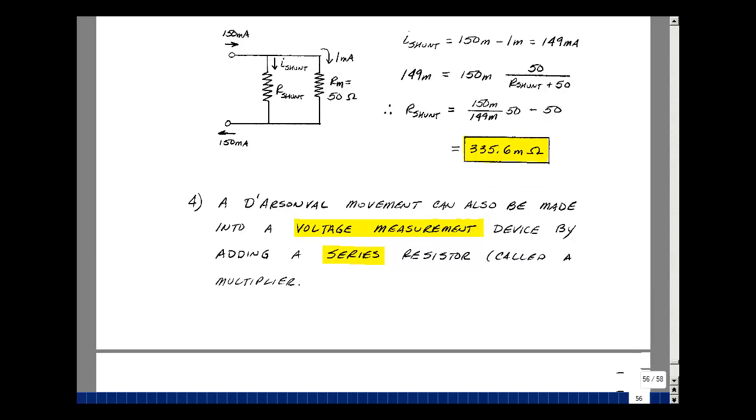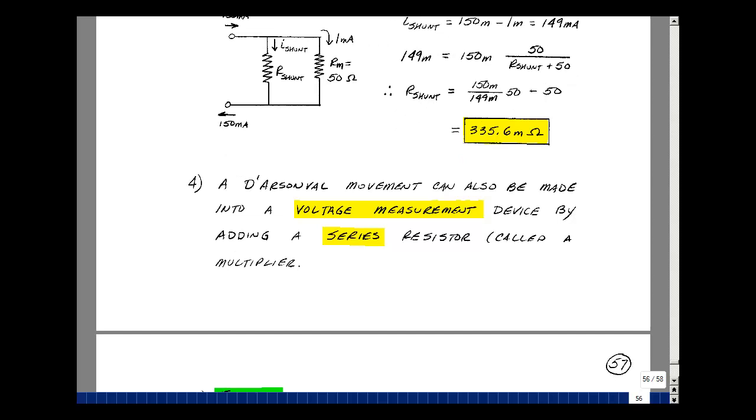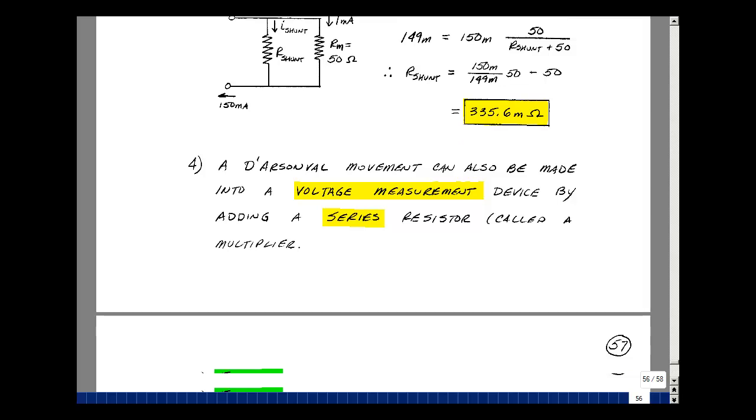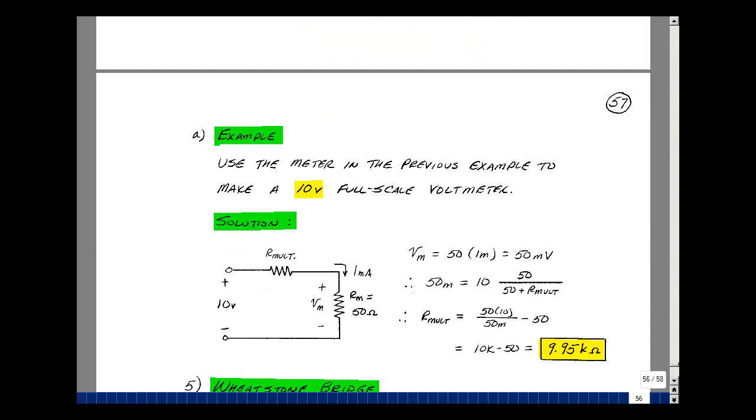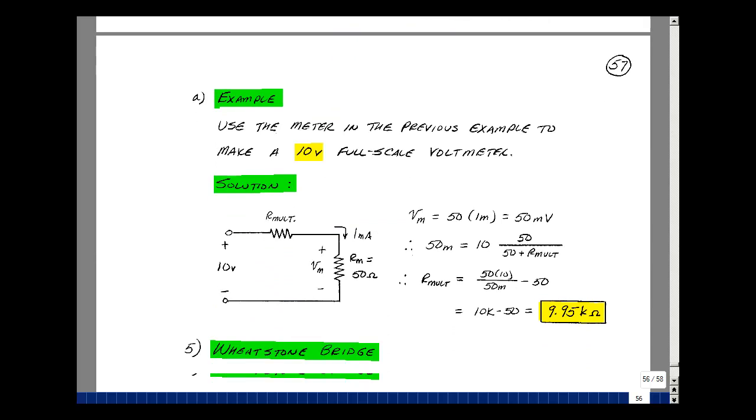Now we use the same meter to make a voltmeter. Here we're going to add a series resistance and create a voltage divider. This series resistance is called a multiplier. Take this meter from the last example and make a 10 volt full-scale voltmeter. When we've got 10 volts applied, we have voltage across my meter. For full-scale deflection, it's 1 milliamp and resistance is 50 ohms, so we're talking about only 50 millivolts here.